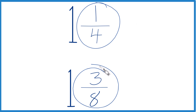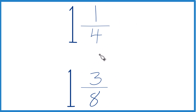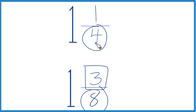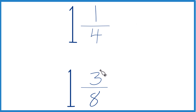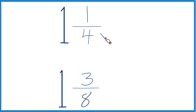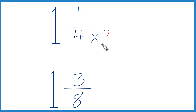If we could get the denominators to be the same, we could just compare the numerators and we'd know whether one and one-fourth is greater than, less than, or equal to one and three-eighths. We can do that by multiplying four times two, which equals eight.